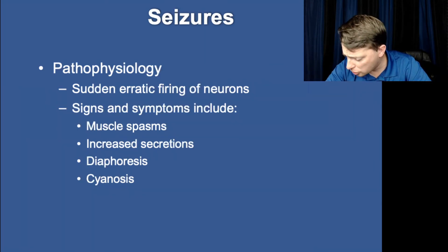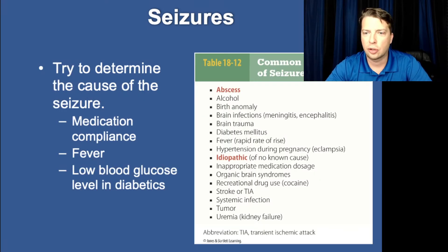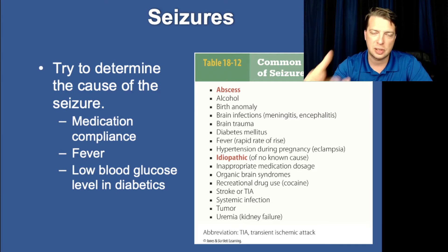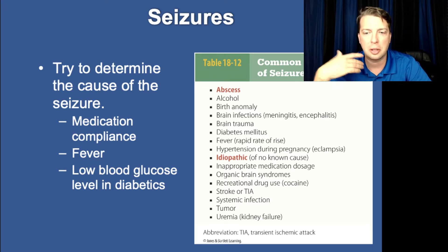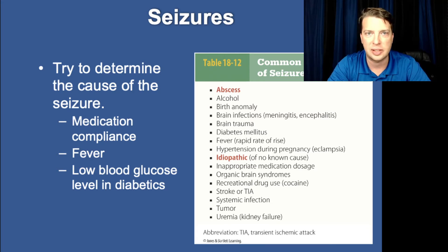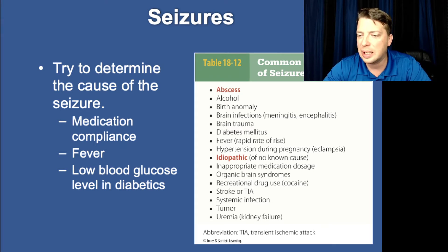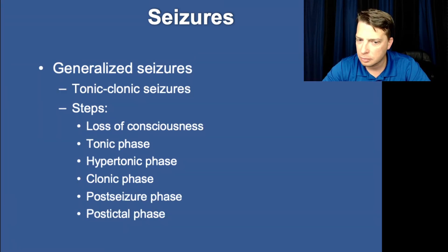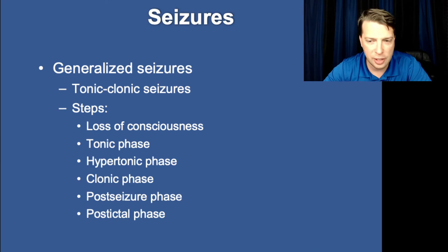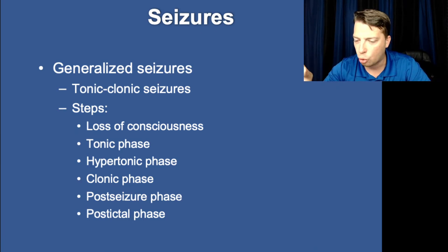Febrile seizures are a generalized grand mal seizure associated specifically with fevers. They present in children generally under six years old, and are rarely repeated as a single event. However, a child who has had a febrile seizure is likely to have them again with future fevers. The key aspect is the rapid change in temperature — it's not so much how high the temperature got, but how quickly it changed.